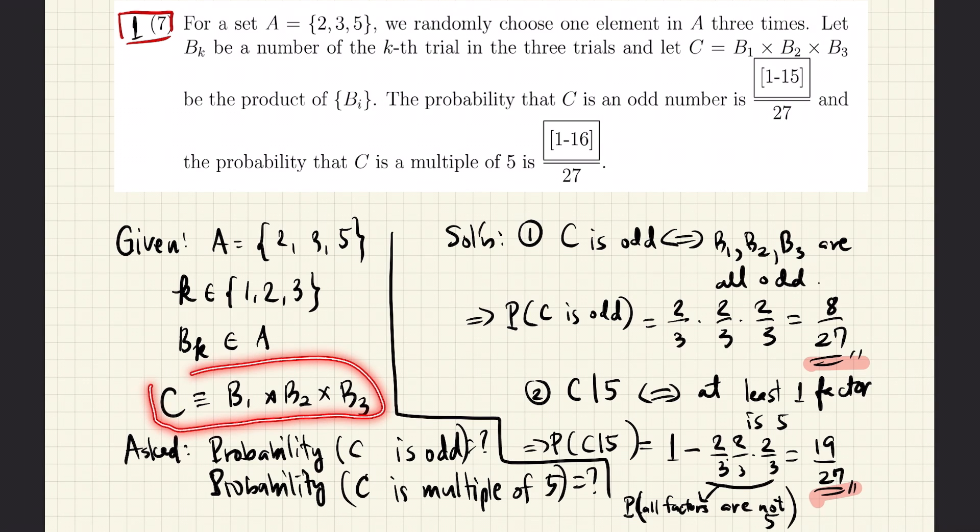Then we are told that we will define a number C that is the product of all three numbers: B1, B2, and B3. We are then asked the probability that this product is odd and the probability that this product is a multiple of 5.